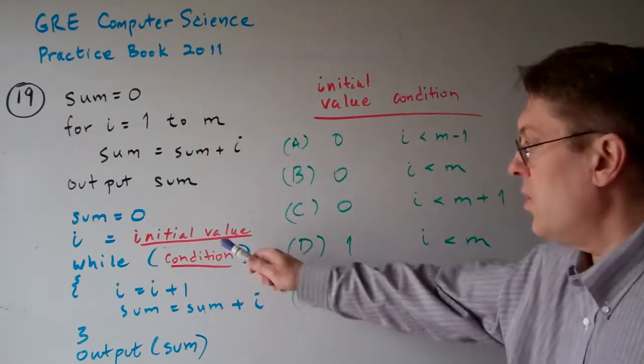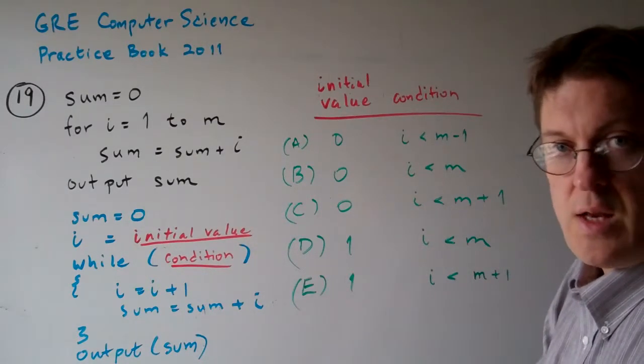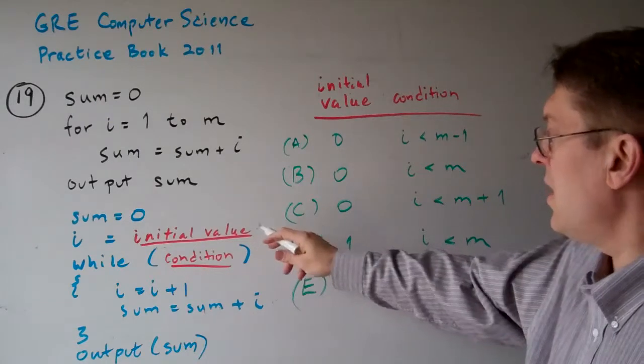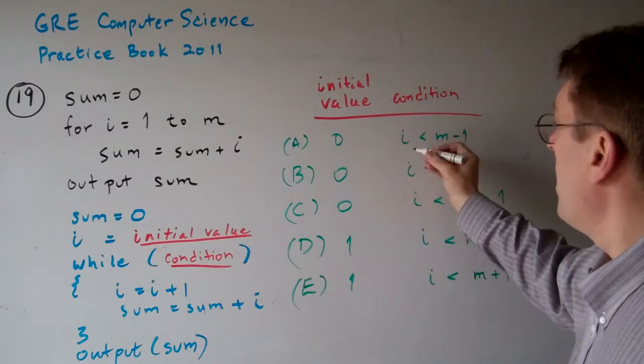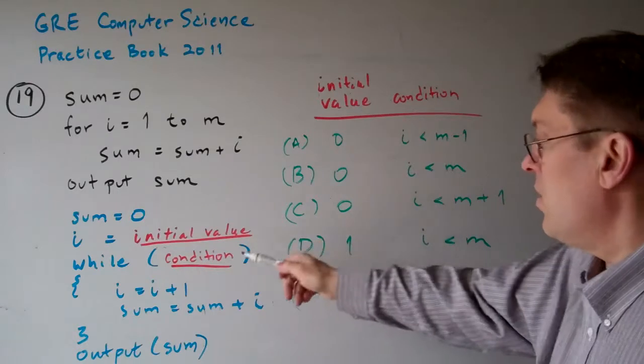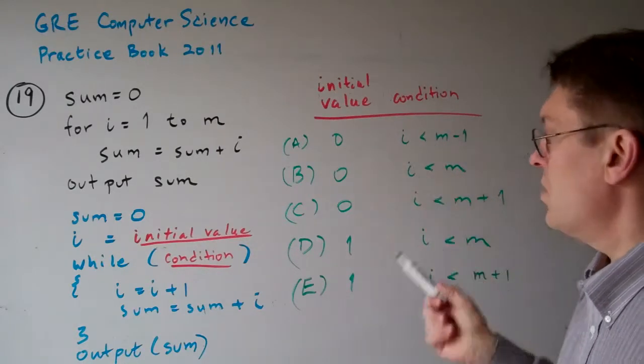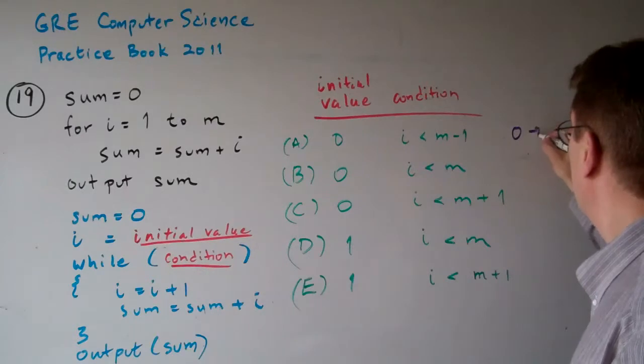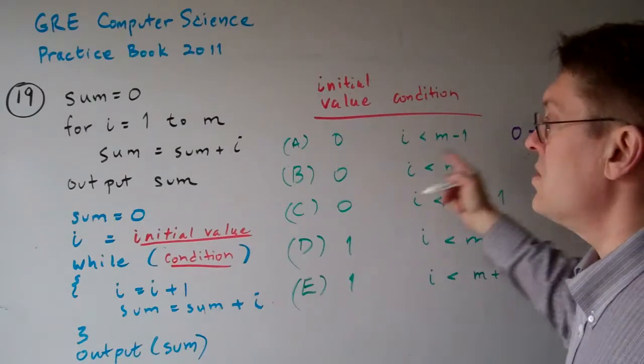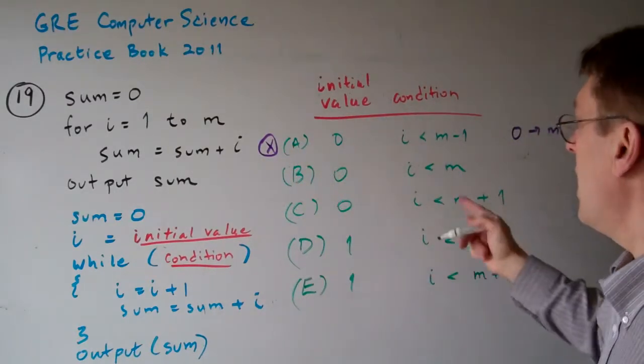Now let's take a look here. We can eliminate some of these answers by looking at how many times it sums. If the initial value is 0 and the condition is i is less than m minus 1, then when it increments i, it's going to keep looping until it gets to m minus 2. We're going from 0 to m minus 2. That's only m minus 1 iterations. We need m iterations, so this can't be the answer.